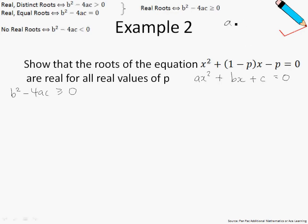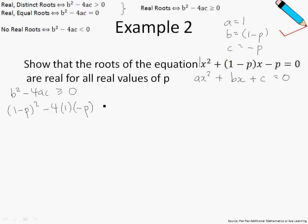In this case, A is just 1 because this is 1x squared, B is 1 minus p, and C is negative p. Let us perform the substitution: we have b squared, which is (1 minus p) squared, minus 4 times A — A is 1, C is negative p. We need to show that this expression is greater than or equal to 0.